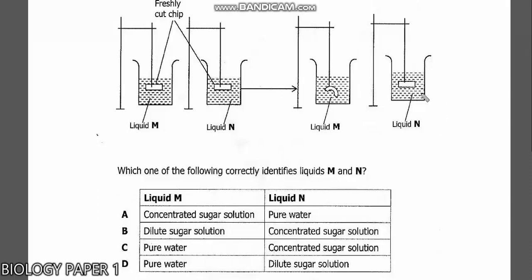In biology you have three types of solutions: isotonic, whose concentration is equal with the concentration inside the cell; hypertonic, a solution whose concentration is higher than that of a cell cytoplasm; and hypotonic, a solution whose concentration is less or lower than the concentration of the cell cytoplasm. Now liquid N, nothing changed, so the concentration of the potato and that of liquid N are equal. Therefore, liquid N is an isotonic solution, and an example of an isotonic solution is pure water.